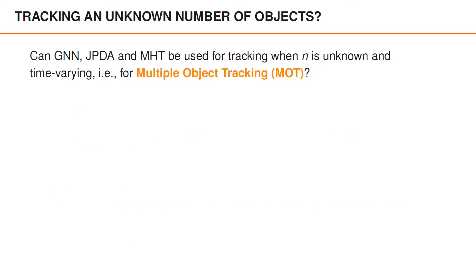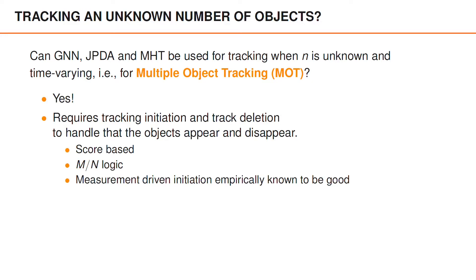The natural extension of tracking a known and constant number of objects is to consider an unknown and time-varying number of objects. So a good question is: can we actually extend GNN, JPDA, and MHT as they have been presented here to handle an unknown and time-varying number of objects — that is, extend them to multiple object tracking? And the answer is, perhaps unsurprisingly, that we can do so. As a matter of fact, the original MHT formulation included inference on the number of objects. The reasons we restricted ourselves to MHT for a known number of objects are mainly that we wanted to keep things simple and increase the complexity of the problem formulation gradually.